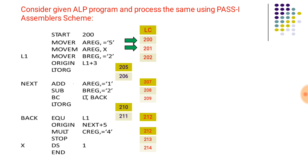The next address is 201, and the next statement will have address 202. The next statement will have address 205, because ORIGIN is an assembler directive with the address specifier L1 plus 3, and L1 has address 202, so 202 plus 3 equals 205. The next address is 205, and then 206 — these addresses are generated for literals when the first LTORG statement is encountered.